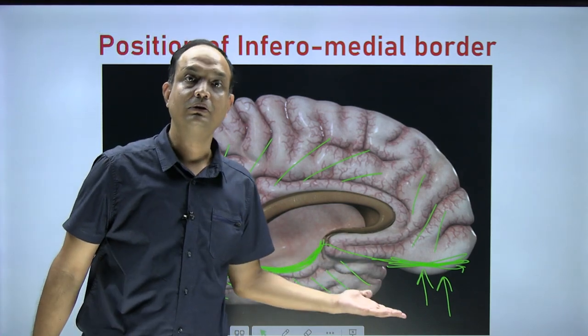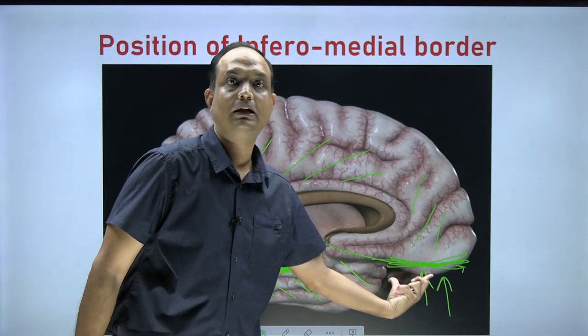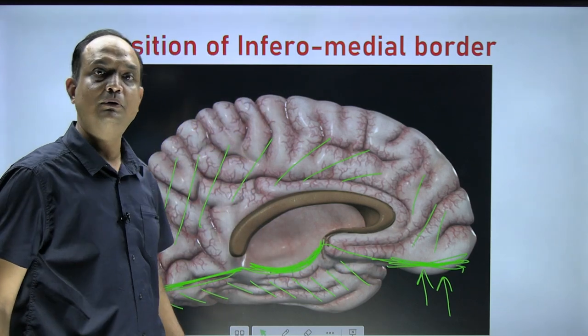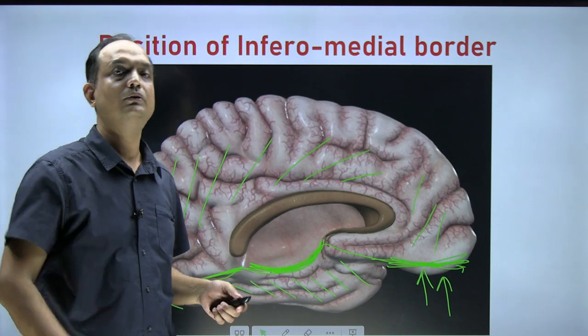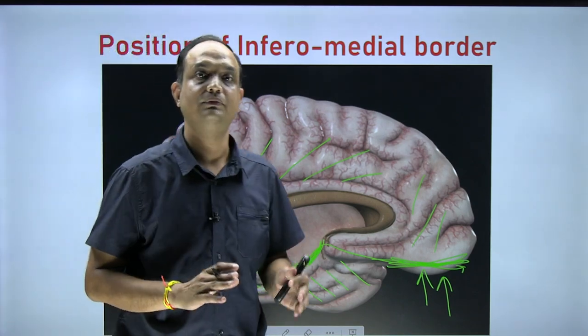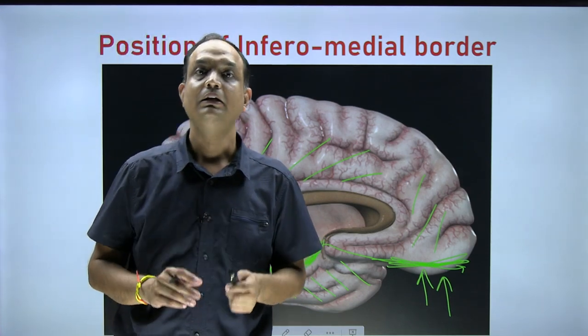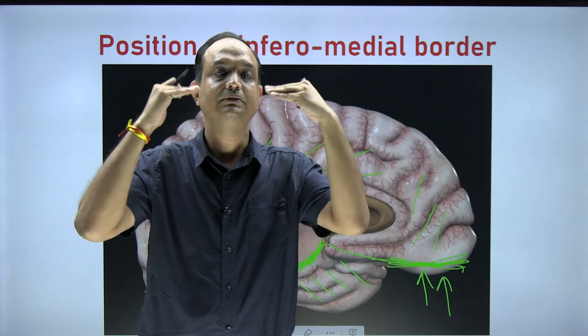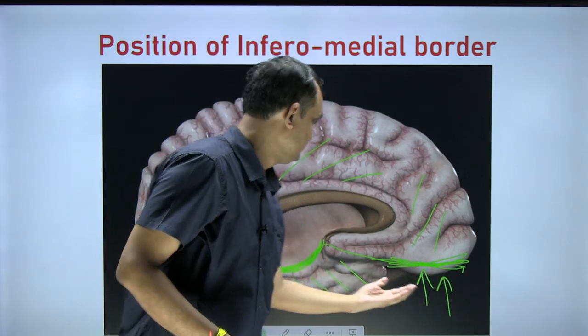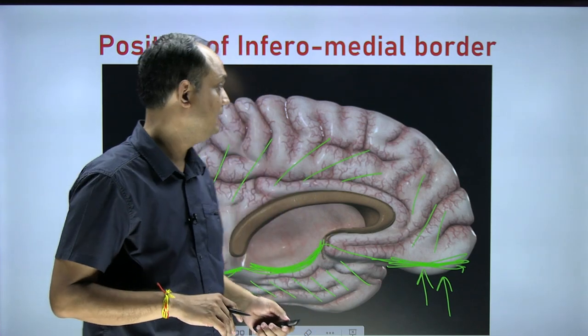In some books the medial border is divided into two parts — medial orbital and inferomedial — while others divide it into three: medial orbital, hippocampal, and medial occipital. The key point is that the positions of all surfaces, borders, and poles must be clear in your mind: the superolateral surface, medial surface, and inferior surface — which is further divided into the smaller anterior orbital surface and the larger posterior tentorial surface. In the coming session we will discuss the sulci and gyri of the cerebral hemisphere. Thank you.